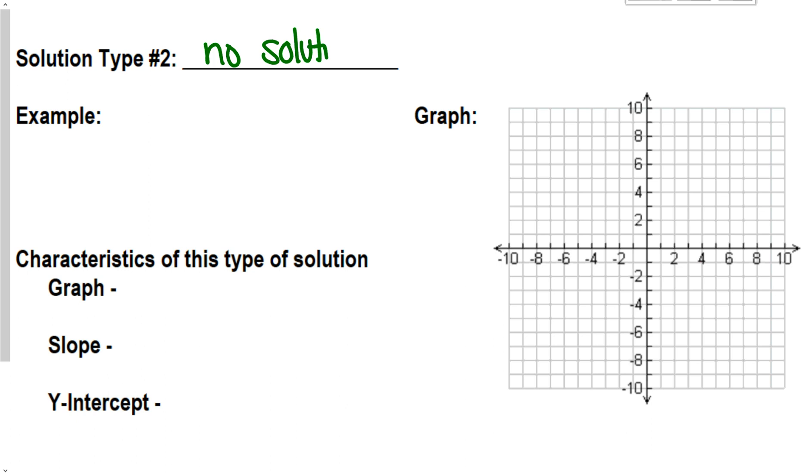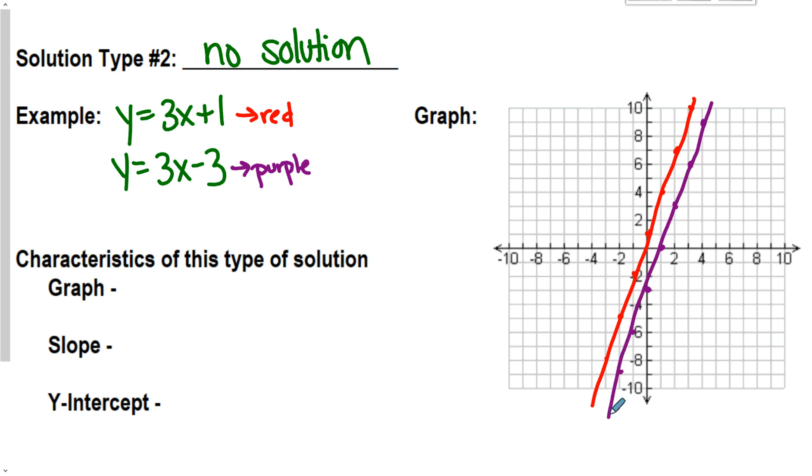For a no solution, our example is going to be y equals 3x plus 1, and y equals 3x minus 3. I'll do this guy in red. I start at 1, and I go up 3 over 1, up 3 over 1. I'll do the second guy in purple. I start this one down at negative 3, and I go up 3 over 1 again.